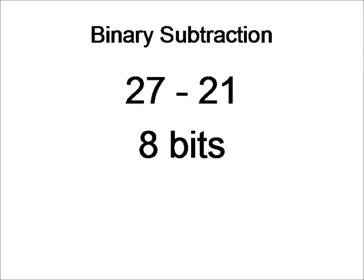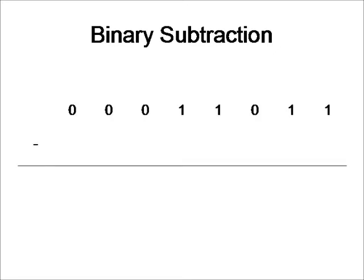Okay, so addition was easy enough, so let's take a look at subtraction. We're going to subtract 27 to 21. And we're going to have 8 bits. So let's go ahead and represent 27 as a binary number. And we got 00011011. And now we will go ahead and represent 21 as a binary number. And that is 00010101.